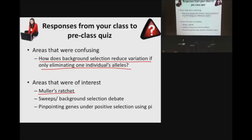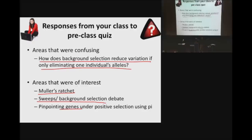A lot of people identified areas of interest. Mueller's ratchet was one; benefits of sexual reproduction in general; and the debate between sweeps and background selection. One person pointed out — and this is true — that this is basically the modern neutralist-selectionist debate. The neutralists are kind of the background selection people, and the selectionists are the sweep people. Also, a lot of people said it was cool that you can pinpoint genes under positive selection using dN/dS. Notably, this debate is unresolved — literally right now, my lab is doing experiments trying to sort out this pair of questions.